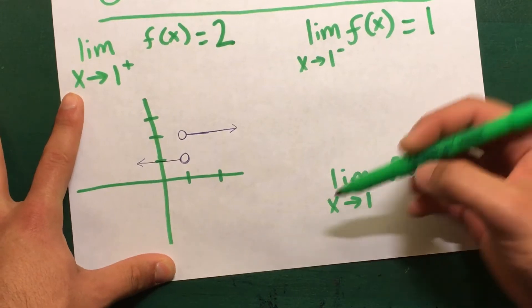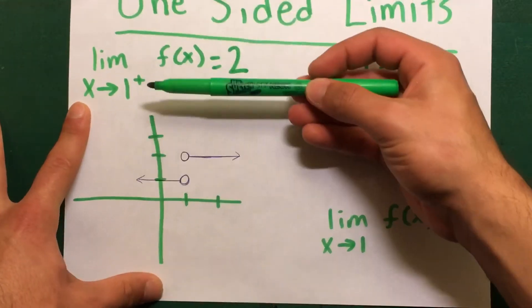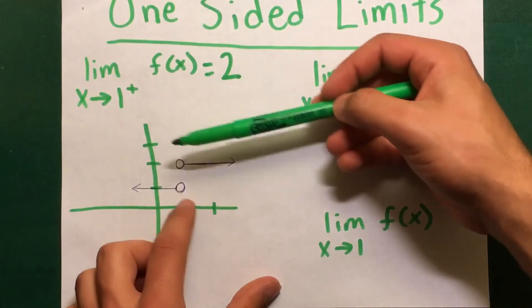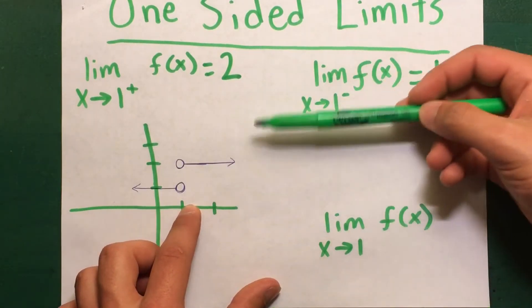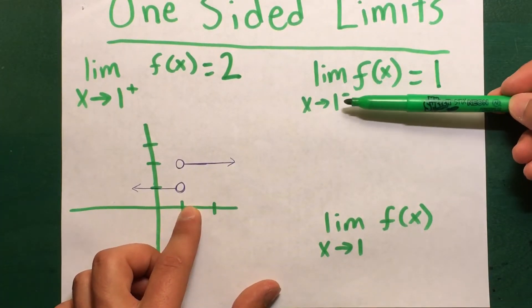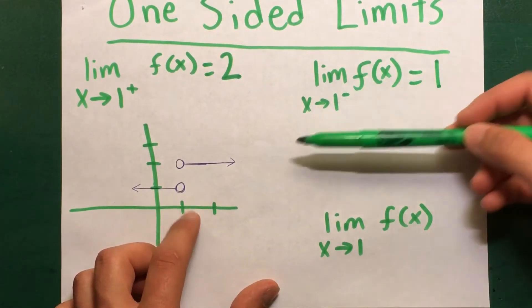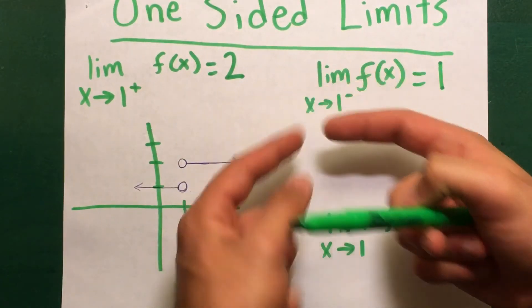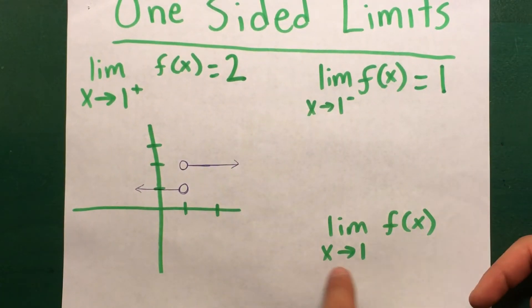The reason why it does not exist is because the limit coming from the right as x approaches 1 does not equal the limit as x approaches 1 from the left. So they need to be equal in order for the limit as x approaches just 1 to be defined.